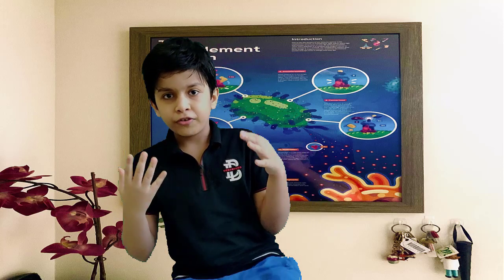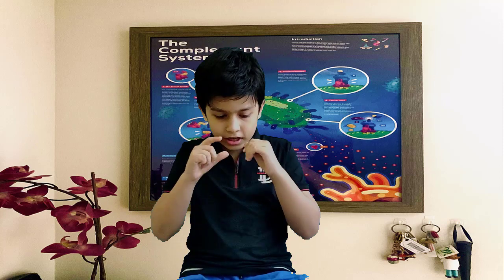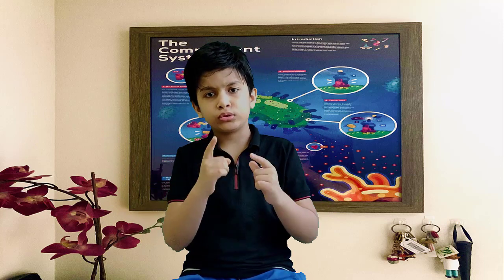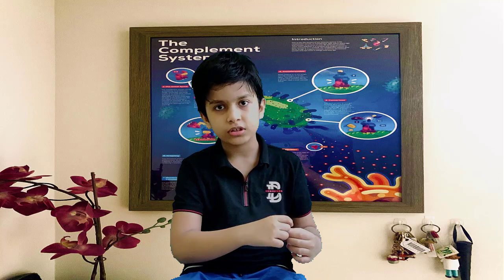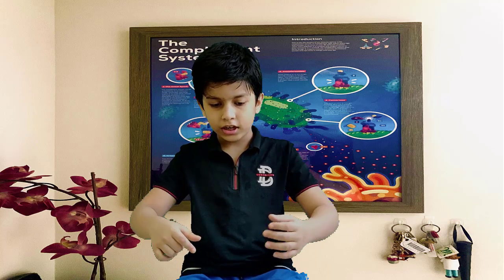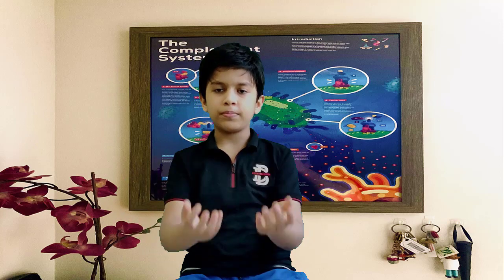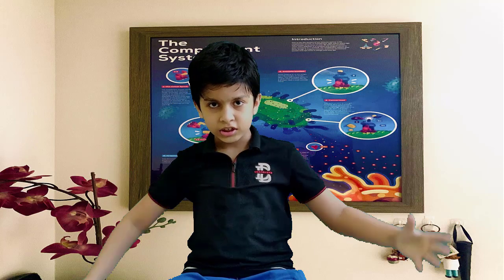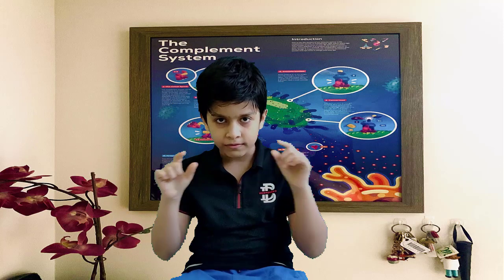Now the complement system begins to actively help kill the enemy. The first immune cells to arrive at the battlefield are phagocytes. Phagocytes trap bacteria in a tiny prison, kill them with acid, and swallow them. But to swallow an enemy, a phagocyte needs to grab it first, which is not easy because bacteria are slippery and hard to grab. However, the complement proteins anchored tightly to the bacteria act like a kind of glue, making it easy for the phagocyte to devour the bacteria.